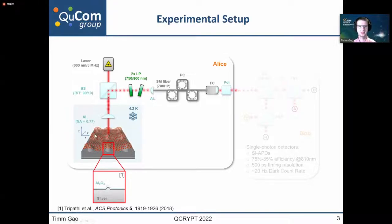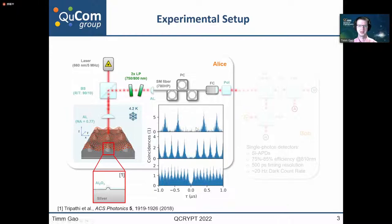We have our sample in a cryostat cooled down to 4.2 Kelvin in a standard confocal microscopy setup. With two long-pass filters and a single-mode fiber coupling, we can separate a single emission line at around 807 nanometer.